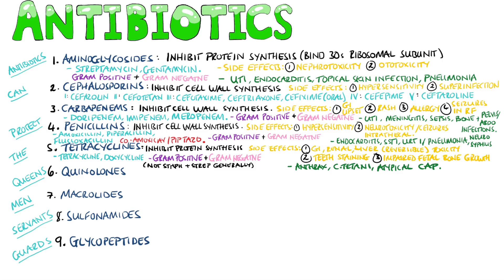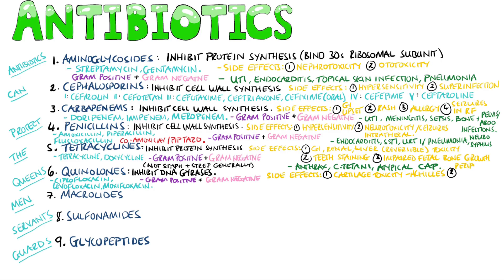Quinolones — specifically fluoroquinolones — are next. Examples include ciprofloxacin, levofloxacin, and moxifloxacin. Their mechanism of action is DNA inhibition, interfering with DNA gyrases specifically topoisomerase 2 and 4, which are responsible for causing DNA to rewind following replication. This class covers both gram-negative and gram-positive bacteria. Respiratory fluoroquinolones have enhanced action against gram-positive bacteria and atypical pneumonia agents such as chlamydia, mycoplasma, and legionella. Side effects include cartilage toxicity, increased risk of tendon rupture particularly in the Achilles tendon, irreversible peripheral neuropathy, and pseudomembranous colitis due to C. diff overgrowth. Indications include atypical pneumonia, UTI, gastroenteritis, and osteomyelitis.